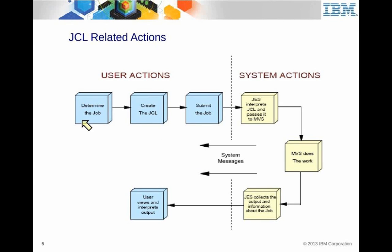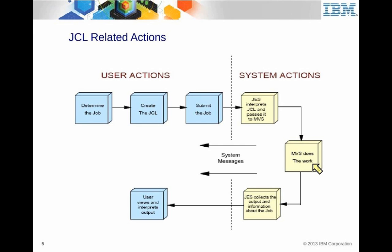Many times a user will determine the job to run and create some JCL. People often don't create JCL from scratch — they take a template from somewhere and modify it, then submit the job. The job is JCL. JES interprets the JCL and passes it to the operating system. The operating system does the work. JES collects the output, and then the user can view and interpret the output.